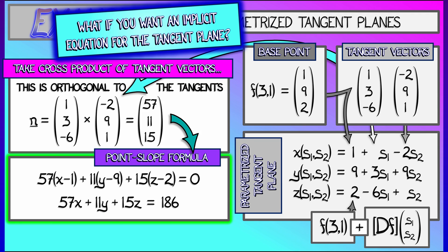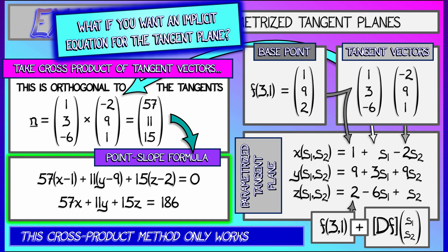One thing to note is that this method for getting an implicit plane based on the cross product only works in 3D, since we don't have a cross product in higher dimensions. The parametrized method, however, does work in higher dimensions. You've got to end. Thank you.